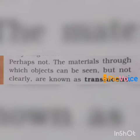The oiled portion of the paper is known as translucent. So what are translucent materials? The materials through which objects can be seen, but not clearly, are known as translucent materials.